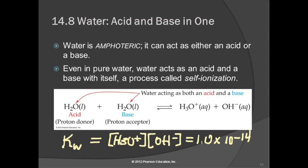Is Kw larger or smaller than 1? It's smaller than 1 — and a lot smaller than 1. That tells us the concentrations of products are very small compared to the concentration of reactants, so the reaction goes in the forward direction just a tiny bit.